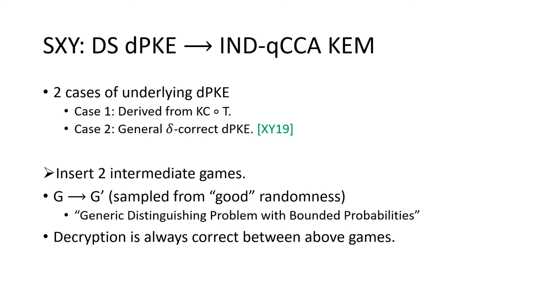Specifically, to deal with the correctness error, we insert two intermediate games into their game-based proof. In the first game, we replace the hash function G from T with G' that only outputs good randomness. In the second game, we change G' back to G.